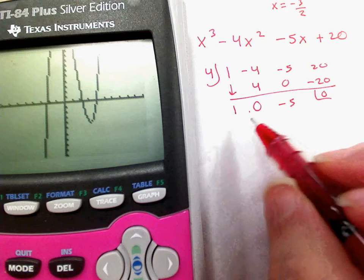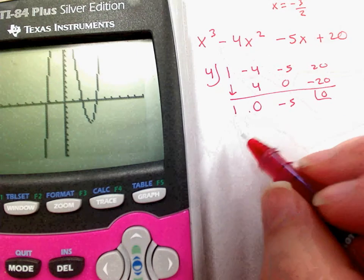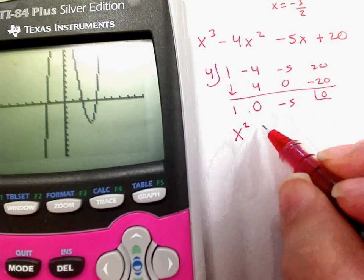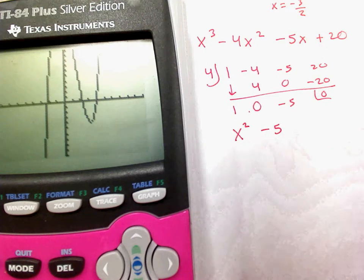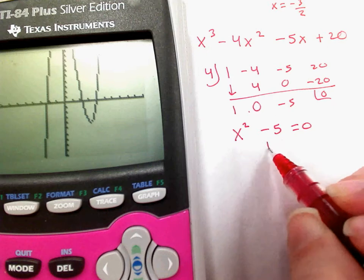Okay, well, so what this is, is if I started with a cubic and I end up with a quadratic. So, this is x squared, plus 0x, minus 5. Well, I want to know when that equals 0, so I set it equal to 0.